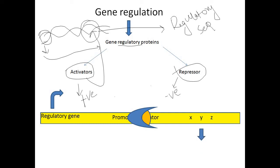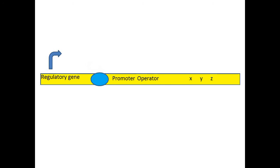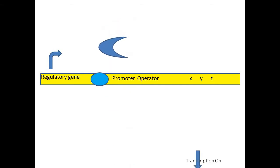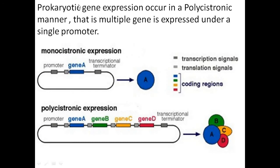So here transcription is off. For positive regulation, the regulatory gene codes for a protein that binds at a sequence near the promoter site. When it binds near the promoter, it recruits RNA polymerase to the promoter region and transcription occurs. In this case transcription is on, and this protein acts as an activator — this kind of regulation is positive regulation.